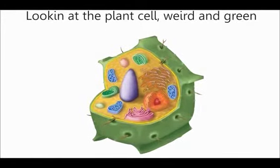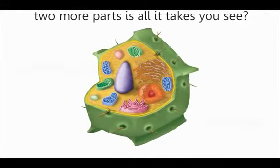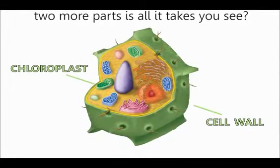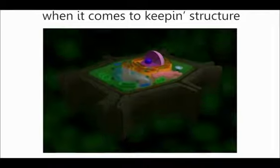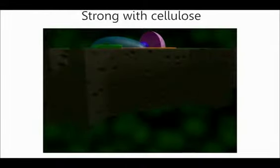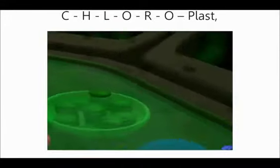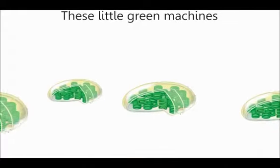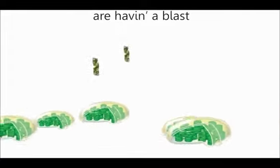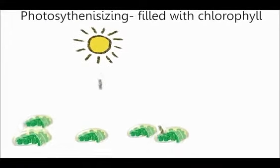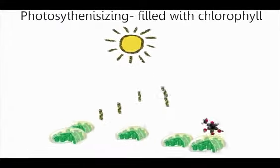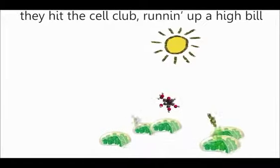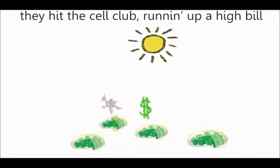Looking at the plant cell — weird and green. Two more parts is all it takes, you see. Cell wall knows what's up when it comes to keeping structure — strong with cellulose, the cell can't get much tougher. C-H-L-O-R-O-Plasts, these little green machines are having a blast. Photosynthesizing, filled with chlorophyll. They hit the cell club, running up a high bill.